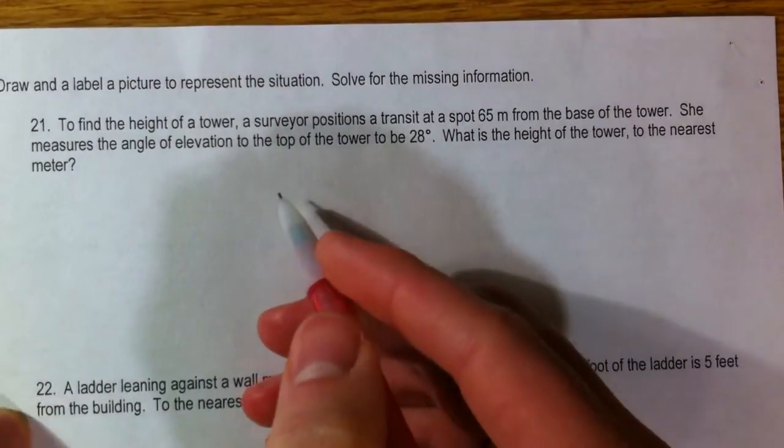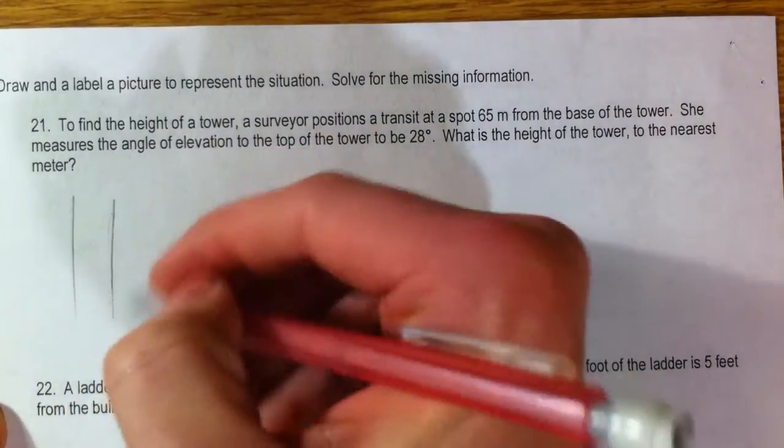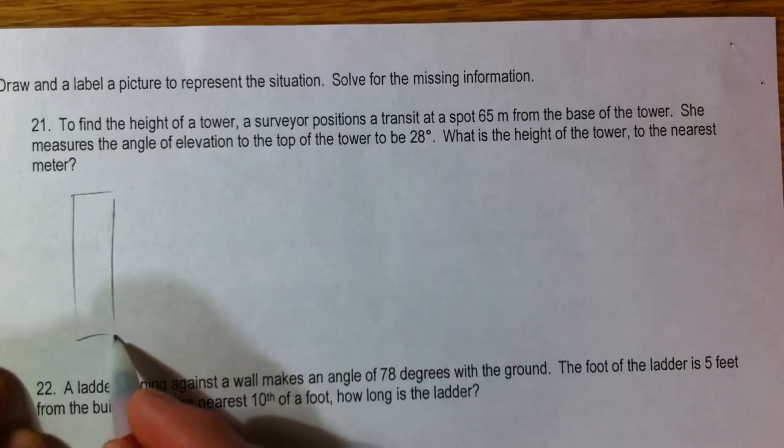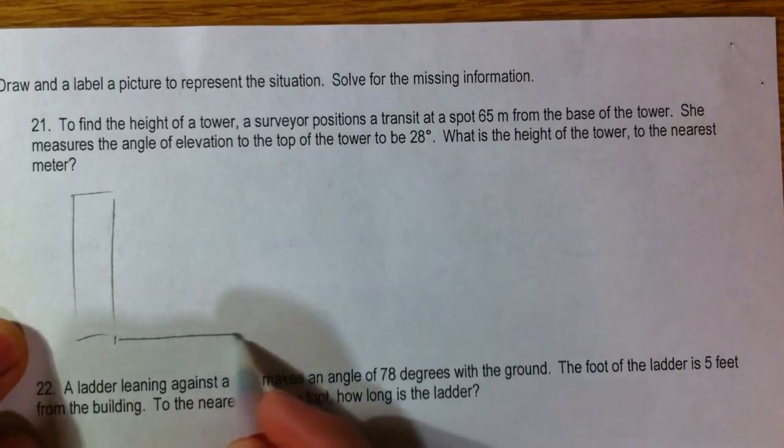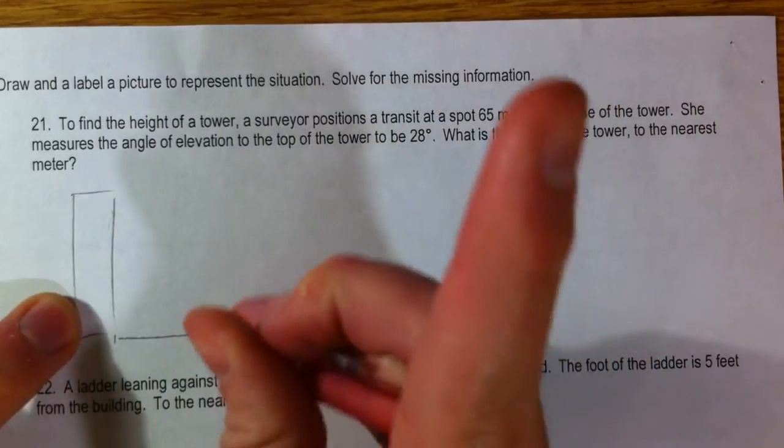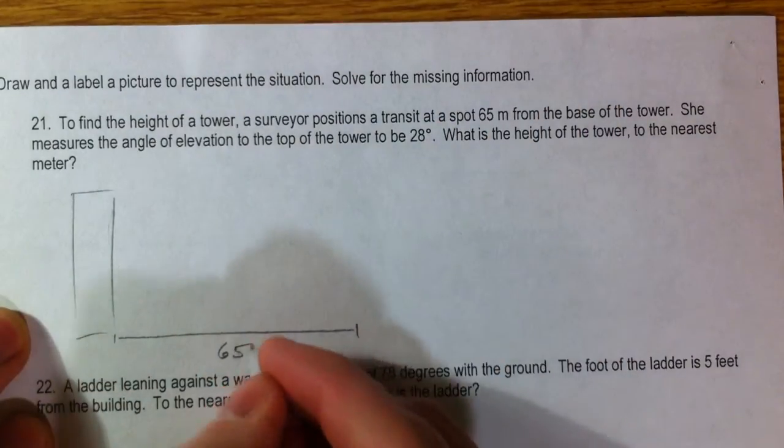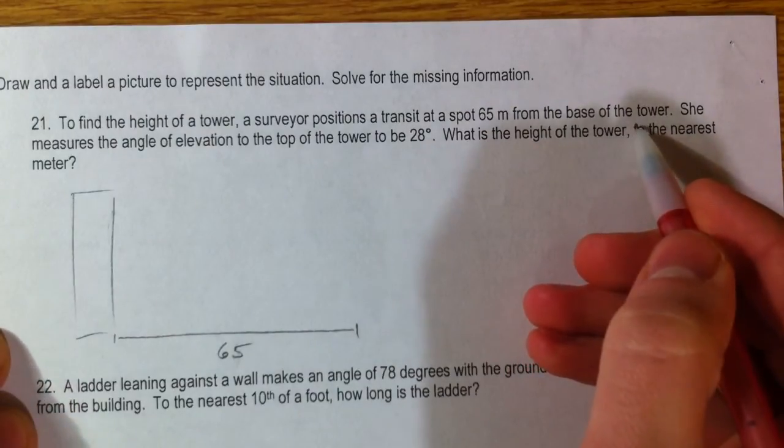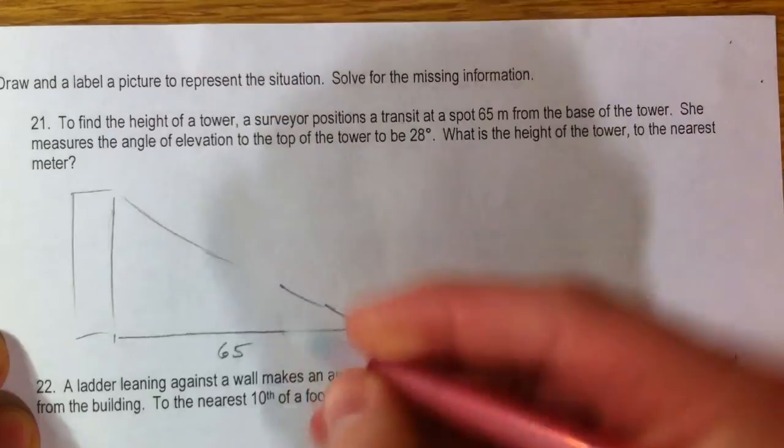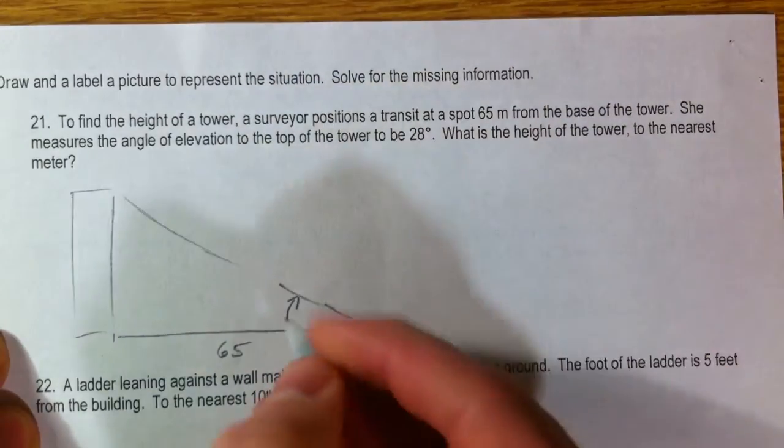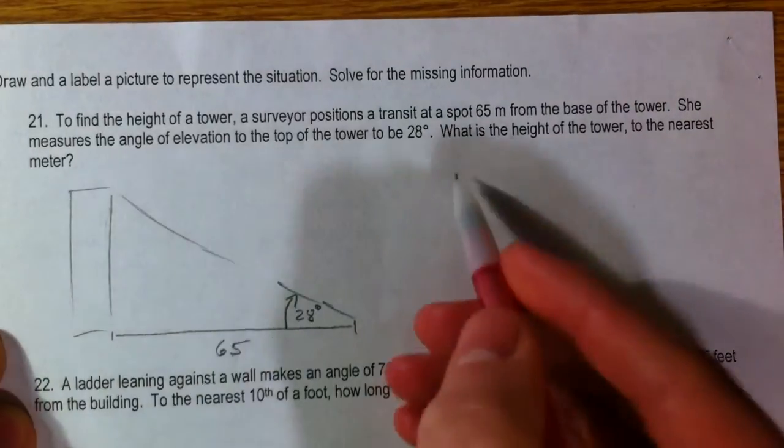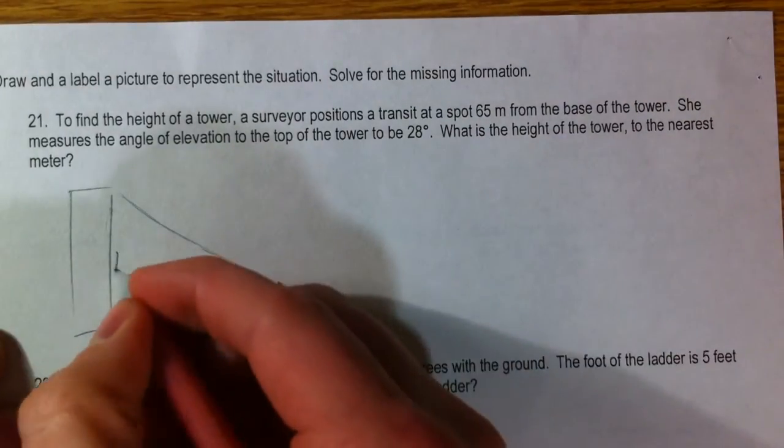So to find the height of a tower, surveyor positions a transit at 65 meters from the base. 65 meters from the base of the tower. It measures the angle of elevation, so we're looking up from the ground. This is the angle of elevation, always from the horizontal, 28 degrees. What is the height of the tower? We're looking for H.